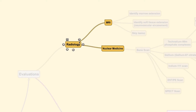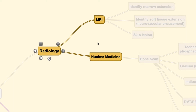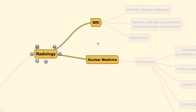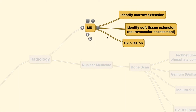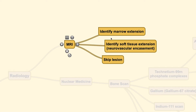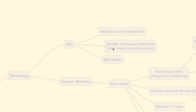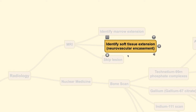Let us start with radiology. In this era, radiology plays a very important role in orthopedic oncology, mainly because of its ability to identify the extension of the lesion, any skipped lesions, and the size of the lesion itself. MRI also has a particular function: its ability to identify the extension of the soft tissue, specifically the encasement of the neurovascular structure. This is very important because if the soft tissue extension of the tumor has reached the neurovascular structures, the limb is usually not salvageable.